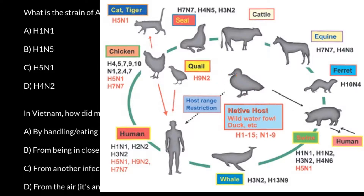All the other animals got this virus from wild birds. First of all, of course, it's going to be domesticated birds such as chickens, and chickens usually also live closely with other animals like pigs, so pigs can also get it from chickens. We can also get some strains of the virus from these domesticated animals.